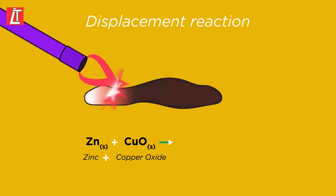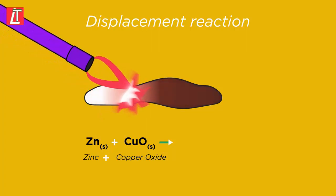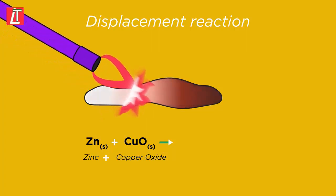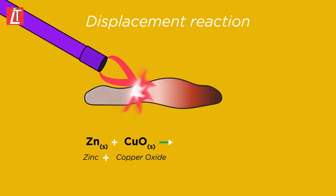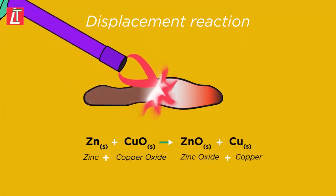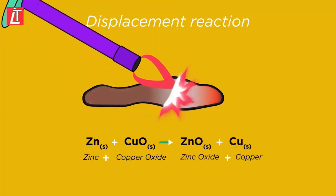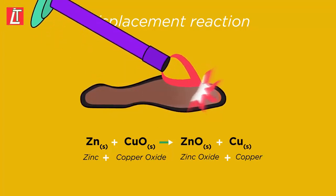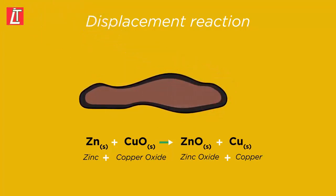we see a violent chemical change — lots of heat and light — making red copper powder and white zinc oxide. Zinc plus copper oxide equals zinc oxide plus copper.